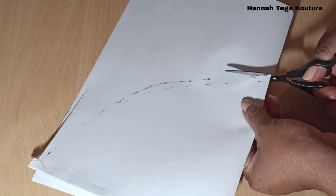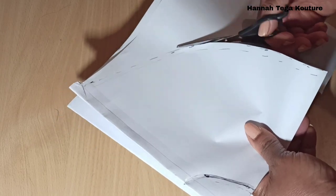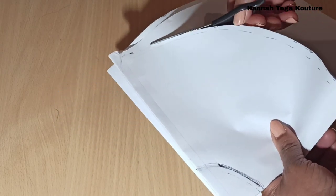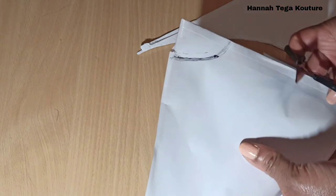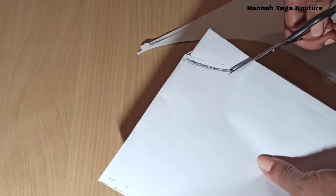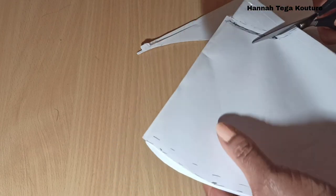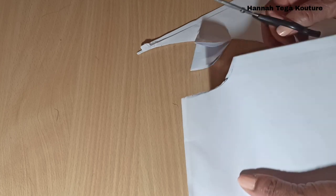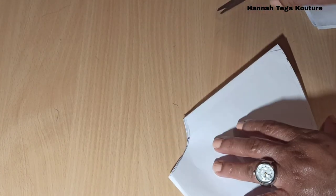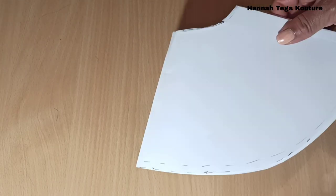So you have the hem allowance on the length, and also around your waist you've got your sewing allowance that you're going to connect to the band of the skirt. You definitely need your sewing allowance for the band of the skirt. Once that is done, your skirt is basically almost ready. Then you want to open it up.